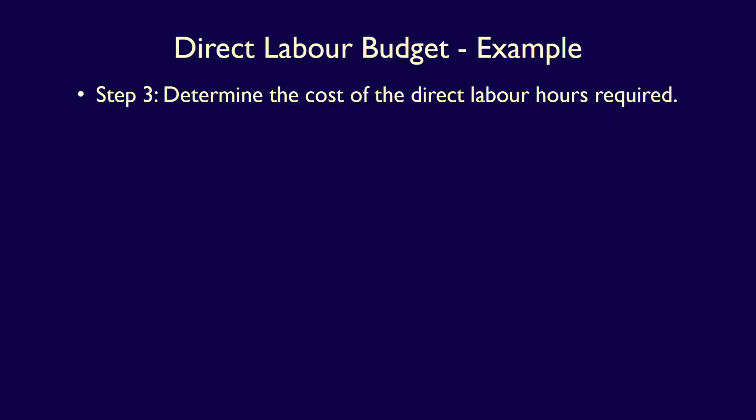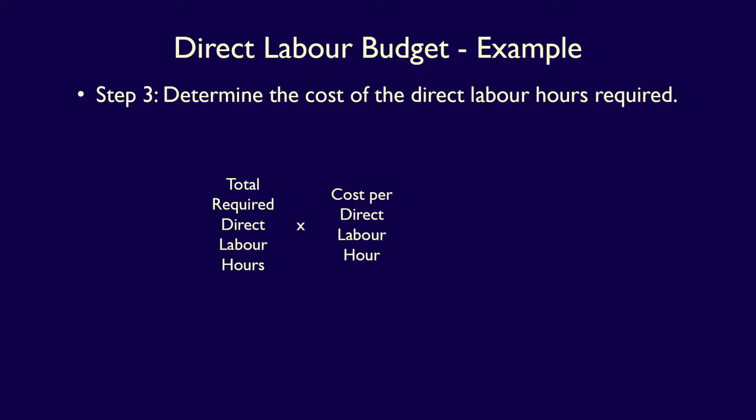We now move on to step 3: determine the cost of the direct labour hours used in production — basically, how much will we pay our direct labour employees? The formula is: total required direct labour hours multiplied by the cost per direct labour hour equals total direct labour costs.